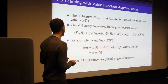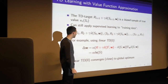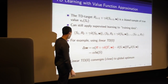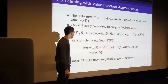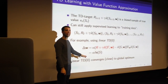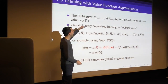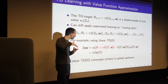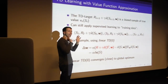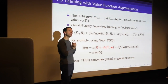Even though TD targets are biased, a famous result by Tsitsiklis and Van Roy shows that linear temporal difference learning still converges — to close to the global optimum, where 'close' depends on the discount factor.